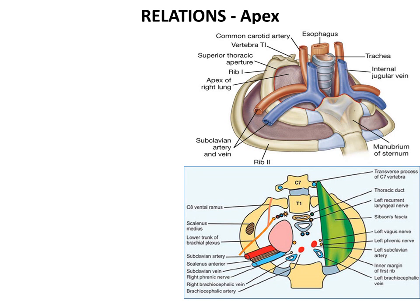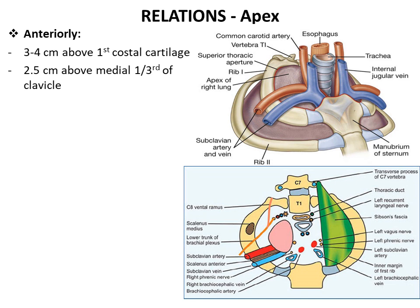The apex of the lung lies in the thoracic inlet and is related to the first rib. Its relations are very important and are better understood if we know the arrangement of structures in the inlet of thorax and the attachment and relations of the first rib. The apex extends approximately 2.5 cm above the clavicle or 3 to 4 cm above the first costal cartilage.